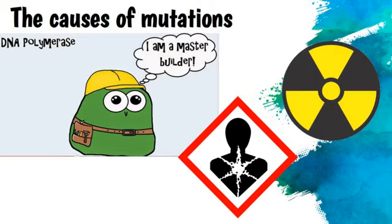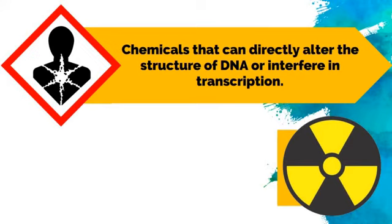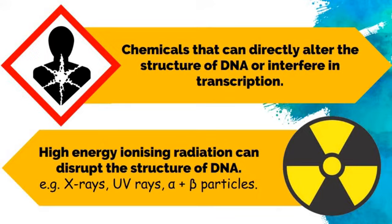Or ionising radiation. Looking at those two chemical types: first, if you're using chemicals that can directly alter the structure of the DNA, or they could interfere in transcription — so your DNA code is okay, but when it gets copied over into mRNA to be used as the instructional template for producing a protein, that process could go wrong. The second is ionising radiation, particularly with high energy, because this will interact with the DNA and physically disrupt its structure. X-rays that accumulate over time, ultraviolet radiation from the sun, or alpha and beta particles from radioactive sources can do this.